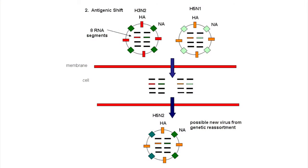This is a schematic of how antigenic shift works. At the top we have two different flu viruses: an H3N2 on the left and an H5N1 on the right, each with their own eight RNA segments. If these two viruses infect the same cell simultaneously — in a pig, a human, or whomever — those gene segments can reassort. At the bottom, you can see a virus that got H5 from the right virus and N2 from the left, creating a new H5N2 subtype.